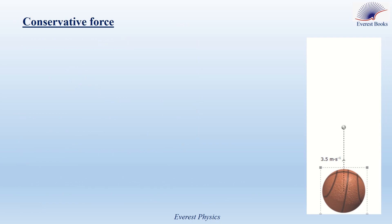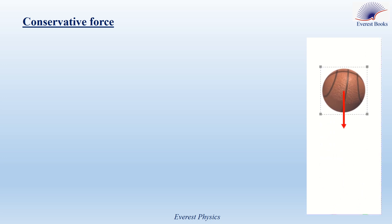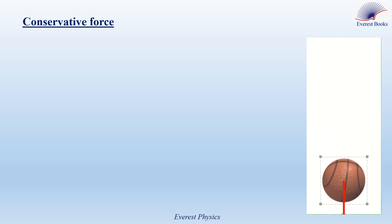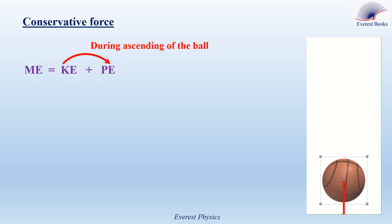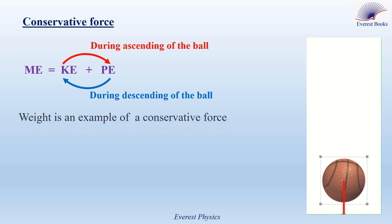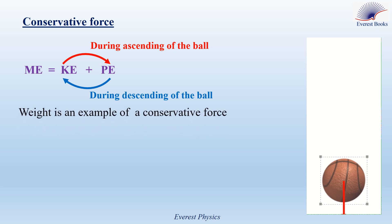Now, conservative forces. Observe the motion of this ball — it moves up and down. Consider the system ball-Earth. The mechanical energy is given by kinetic energy plus gravitational potential energy. During ascending, the work done by the weight results in a transformation of kinetic energy into potential energy. While during descending, the work done by the weight results in a transformation from potential energy into kinetic energy. Since both are parts of the mechanical energy, the work done by the weight does not vary the mechanical energy. Therefore, weight is called a conservative force.